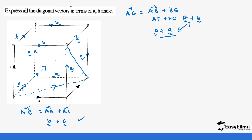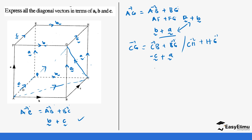Next, let's look at diagonal CG, moving from C to G. We can use CB plus BG: CB is opposite of BC, so it's minus C, plus BG which is A — giving us A minus C. Alternatively, CH plus HG: CH is A, and HG is opposite of C, giving minus C. So CG equals A minus C. Both paths confirm the same answer.